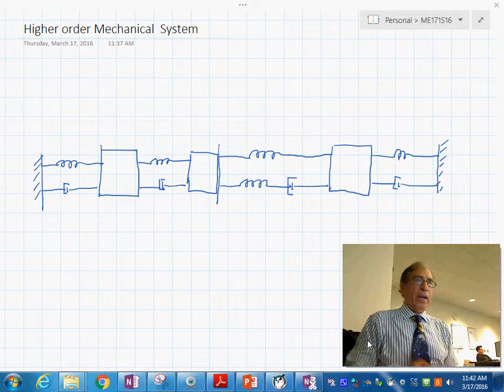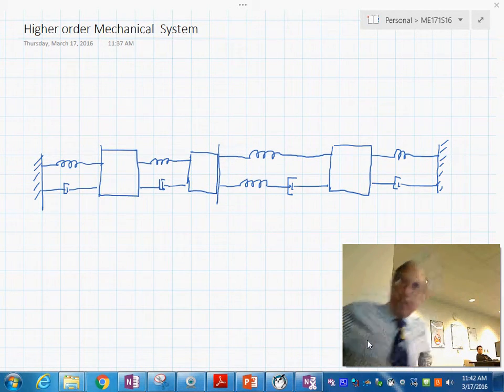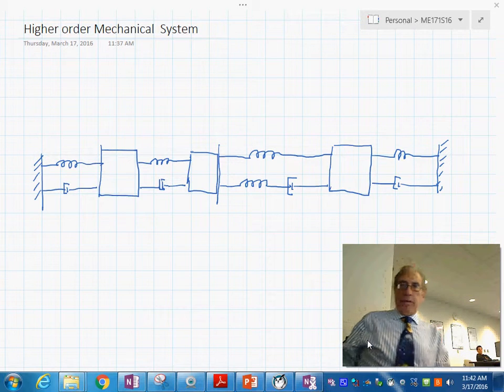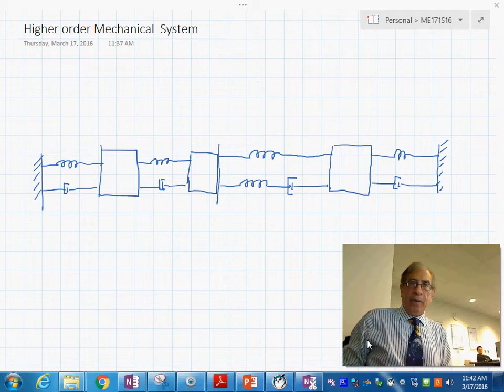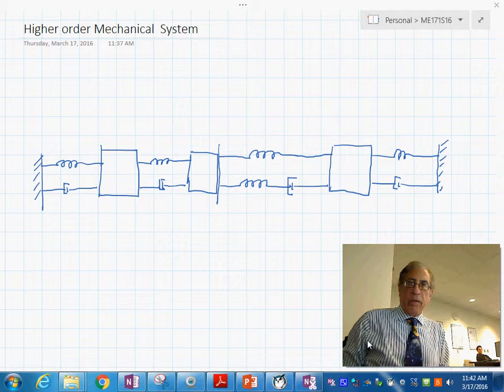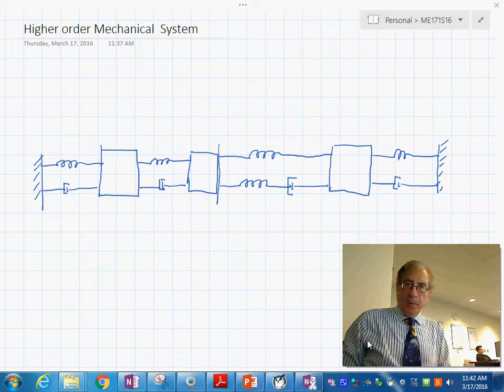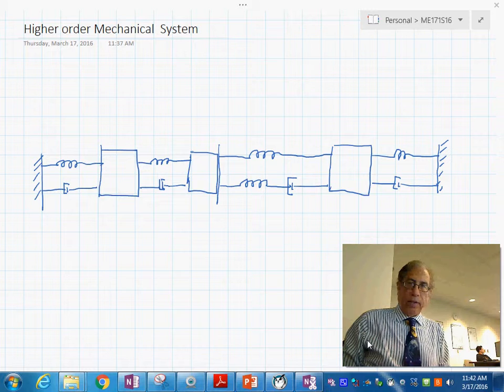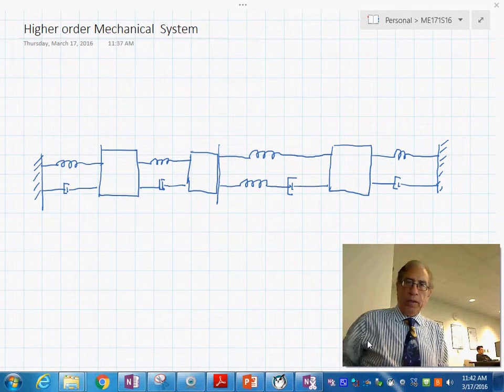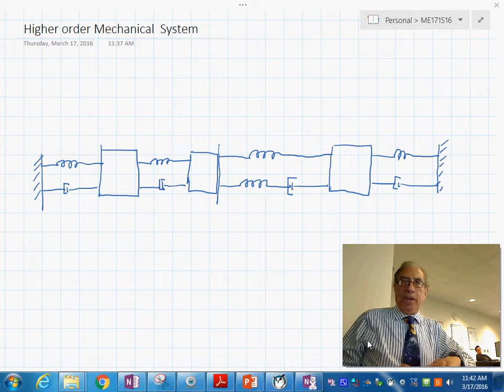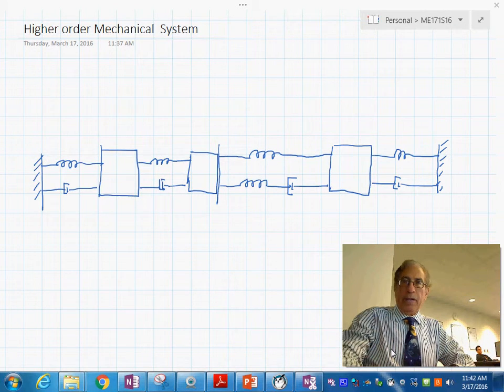We have now a mechanical system, a more significant mechanical system in front of us. The idea here is to show you how to build a bond graph model right on the physical system so that you can see a one-to-one correspondence between the elements of the system and your bond graph model.